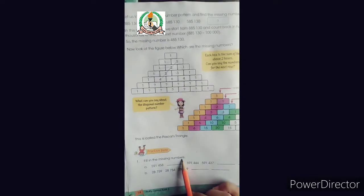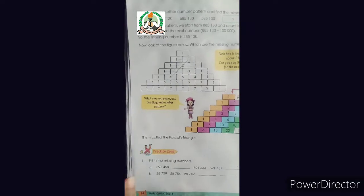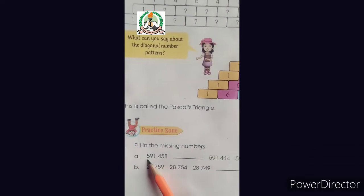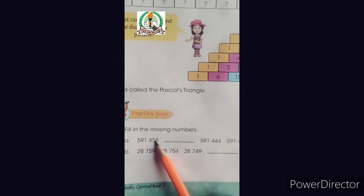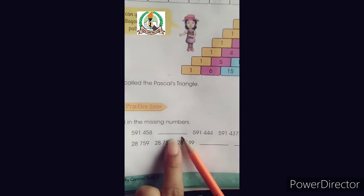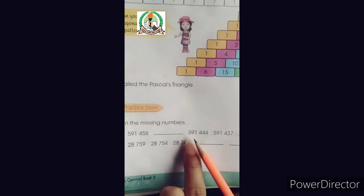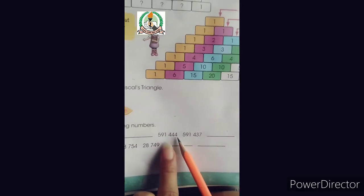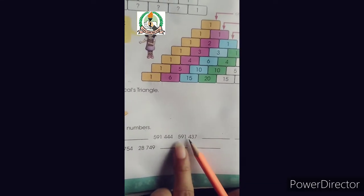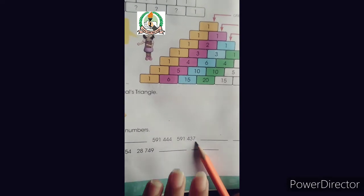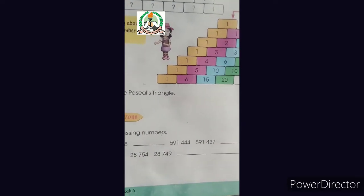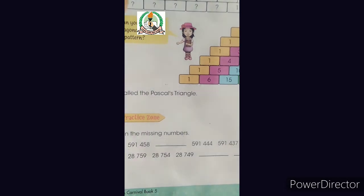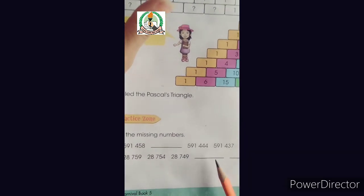Fill in the missing numbers. In part A, we can read this number: 591,458. Then one number is skipped. The third number is 591,444, then 591,437. You have to realize that we are counting backwards and we will write it in decreasing order.